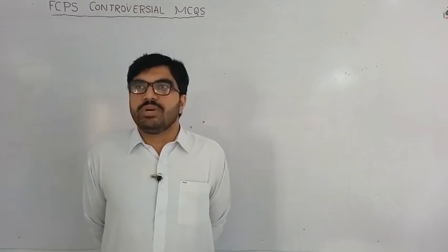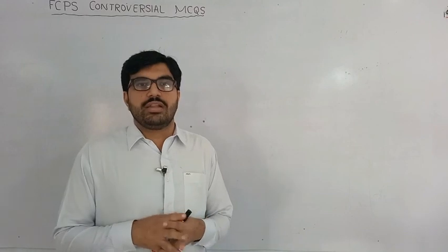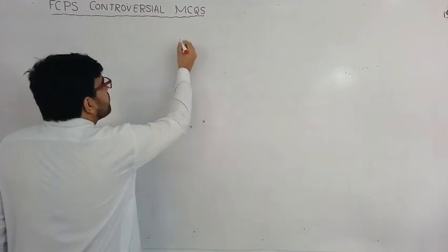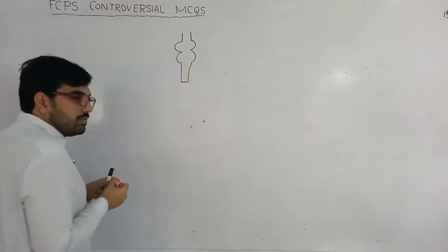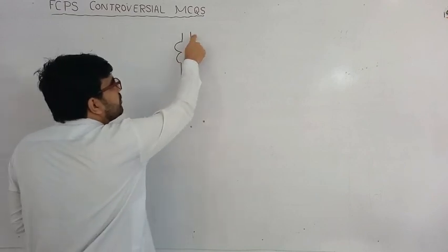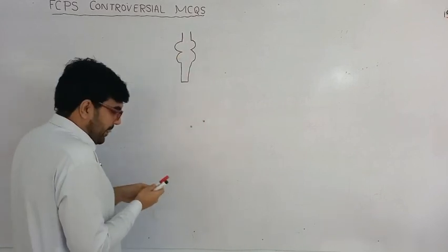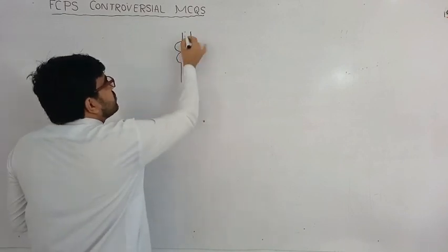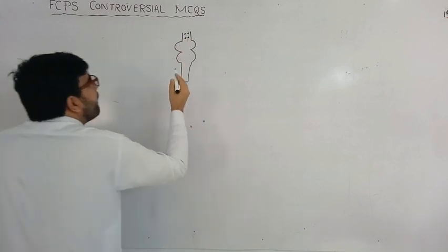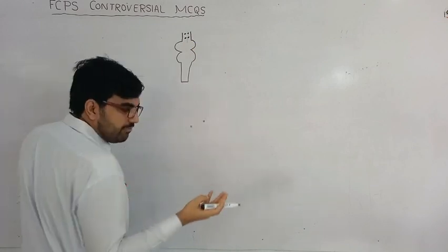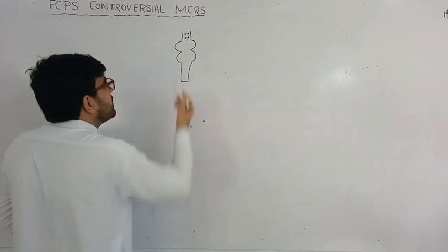Another MCQ that CPSP will confuse you with is regarding mandible deviation and protrusion. To answer all these questions, we must know the normal anatomy of the midbrain, pons, and medulla, and the cranial nerves and their distribution. If I draw the brainstem: this is the midbrain, this is the pons, this is the medulla, and this is the spinal cord. Third and fourth cranial nerves lie in the midbrain, next four lie in the pons, and the last four lie in the medulla.